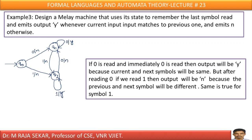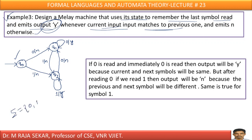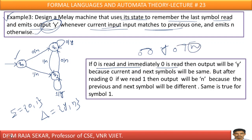Example 3: Design a Mealy machine that uses its state to remember the last symbol read, and emits output Y whenever the current input matches the previous input, otherwise it emits N. The input alphabet sigma equals {0, 1} and the output is {Y, N}. Let Q0 be the initial state. If zero is read, then again if zero is read, it is matching — so print Y. If zero is read and then one is read, they are not matching — print N.